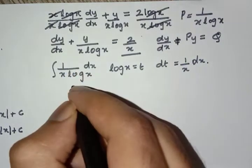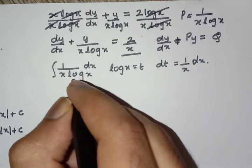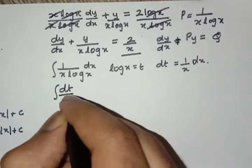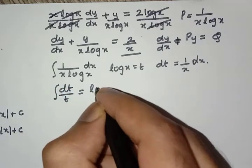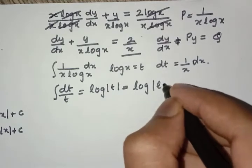So we have 1 by x dx here, so we'll substitute by dt. So we get dt by t. Integral dt by t is equal to log mod t or log mod log x.